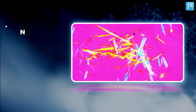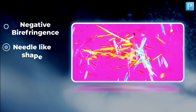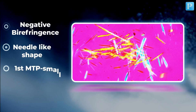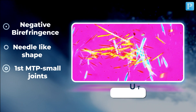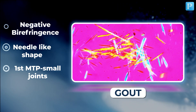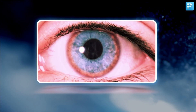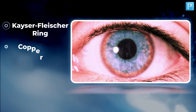Here we can see negative birefringence, needle-like shape, and first MTP small joints. The disease in this image is gout.